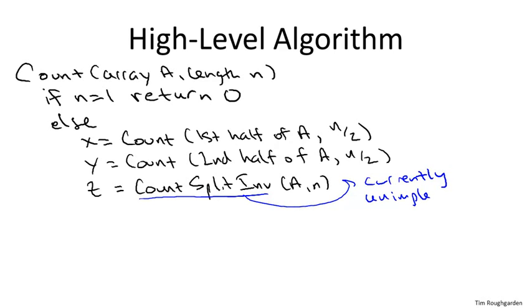So that's our high-level attack on how we're going to count up the number of inversions, and of course, we need to specify how we're going to count the number of split inversions, and moreover, we'd like that subroutine to run quickly. In analogy to merge sort, where outside the recursive calls we did merely linear work in the merge subroutine, here we'd like to do only linear work in counting up the number of split inversions.